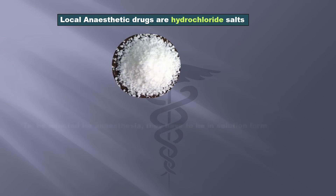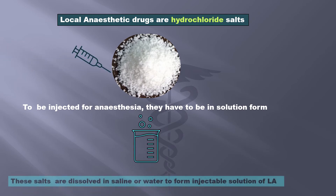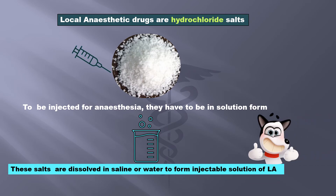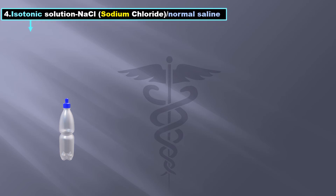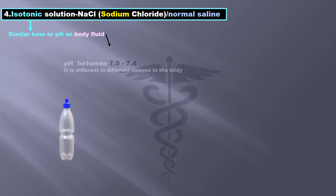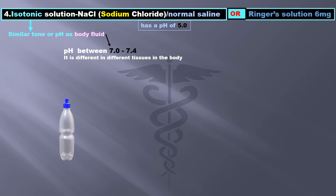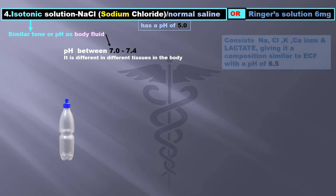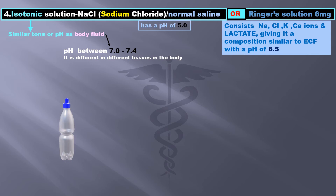Another important factor is that LA drugs are hydrochloride salts. To be injected for anesthesia, they have to be in solution form — these salts are dissolved in saline or water to form an injectable solution. The fourth addition is an isotonic solution of sodium chloride, that is normal saline. Isotonic means similar tone or pH as body fluids. Body fluids have a pH ranging from 7 to 7.4. Normal saline has a pH of about 5. Ringer's lactate solution can also be used instead — it contains sodium, potassium, chloride, and calcium ions along with lactate, giving it a composition more similar to extracellular fluid with a pH of 6.5.